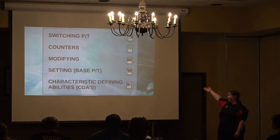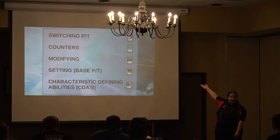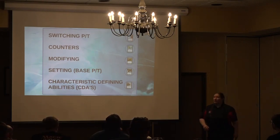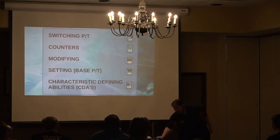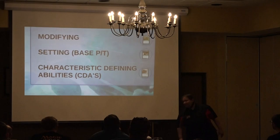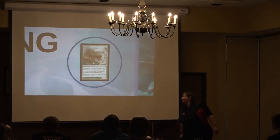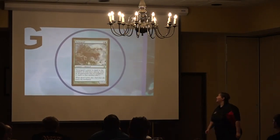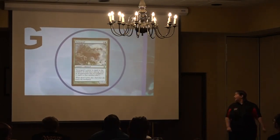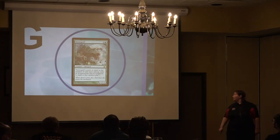For example, Tarmogoyf says its power and toughness — which would normally just be printed numbers — but here is the order of the sub-layers: characteristic-defining is first, then setting, then modifying, then counters, then switching.